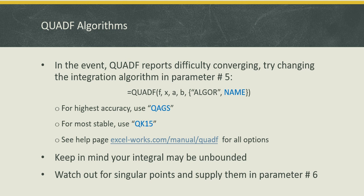In the event QuadF is unable to calculate the integral properly or having difficulty converging, the first thing you want to try, if you are certain that your integral exists, is to try a different algorithm. You can do that in the optional argument number five using the key 'algor', as I demonstrate in this formula right here. So in argument five, we can use the constant array syntax, which is convenient to pass the key and a value for the key. There are a number of algorithms available, and those are listed at the help page for QuadF. You can check it out at excel-works.com/manual/quadf.